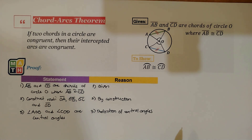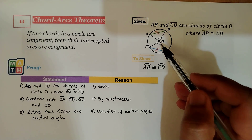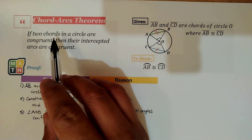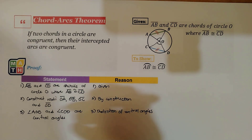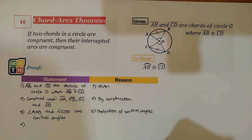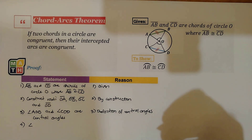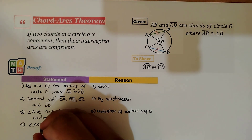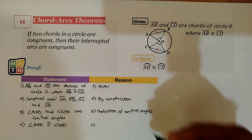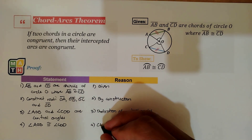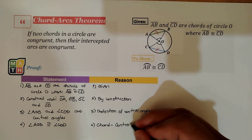We don't need to show the full proof for the congruence of these two triangles — which is needed in proving this theorem — because we have already established that in the previous video. We can now assume that central angle AOB is congruent to central angle COD, because of the previous proof on the Chord-Central Angles Theorem.